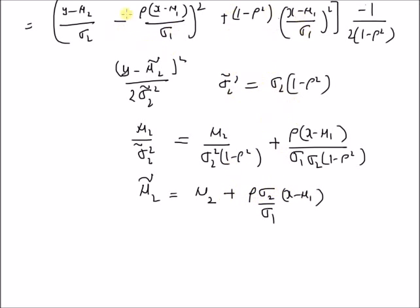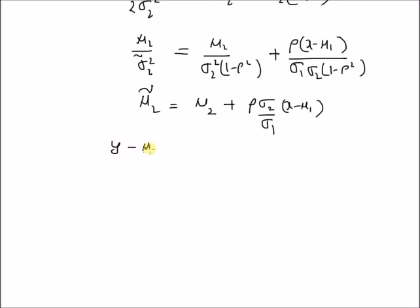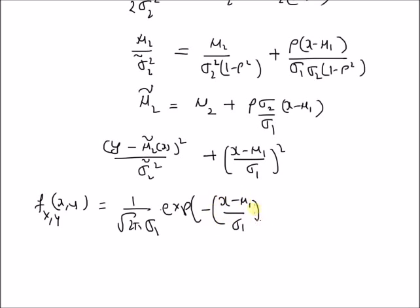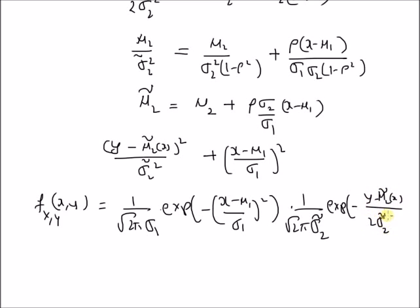Now by using these two definitions in the exponent term, we have [(y−μ̃₂(x))/σ̃₂]² plus [(x−μ₁)/σ₁]². We can rewrite the joint PDF as [1/(√(2π)·σ₁)]·exp(−(x−μ₁)²/(2σ₁²)) times [1/(√(2π)·σ̃₂)]·exp(−(y−μ̃₂(x))²/(2σ̃₂²)). This is f(x,y), where the second factor is f(y|x) and the first factor is f(x).